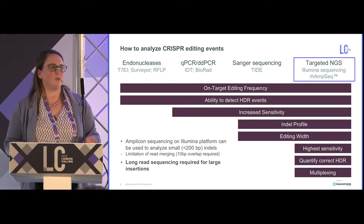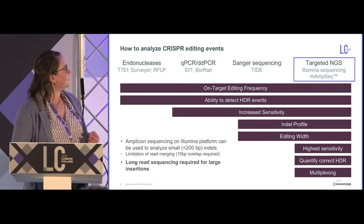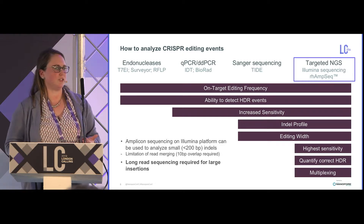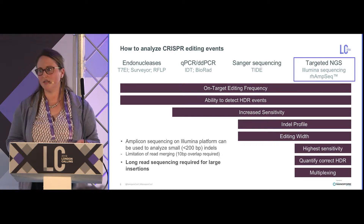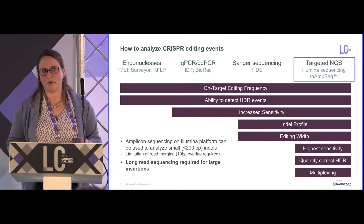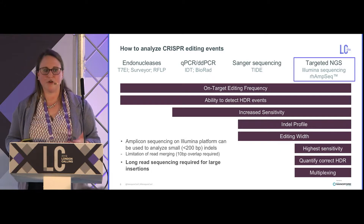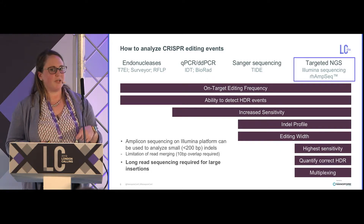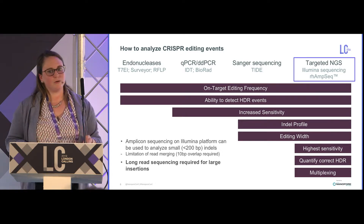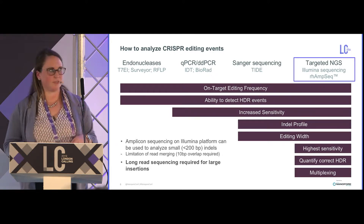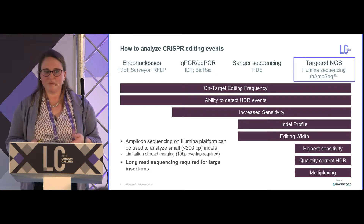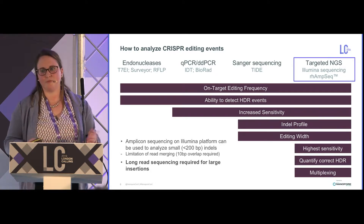The T7E1 assay doesn't capture single-base insertions well, so it underestimates total editing frequency. Droplet digital and qPCR assays increase sensitivity, but still don't tell you about the actual insertions and deletions present. Sanger sequencing with TIDE analysis deconvolutes the spectrum from a polyclonal population to give some information about indels. But next-gen sequencing is required for the highest sensitivity and ability to quantify the true fraction of HDR. It also allows multiplexing — our RampSeq multiplexed amplicon sequencing can combine up to 1,000 different PCR amplicon reactions into a single tube.